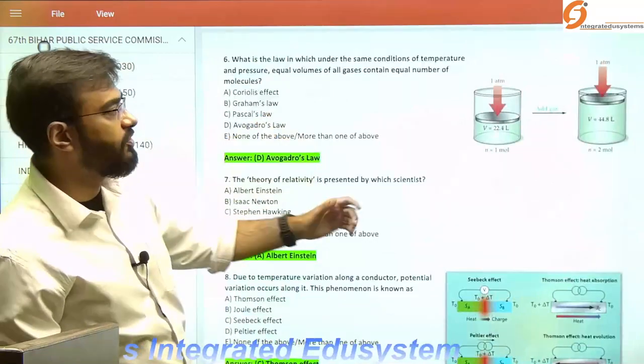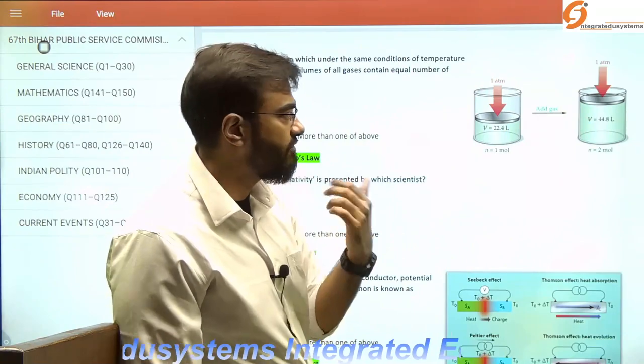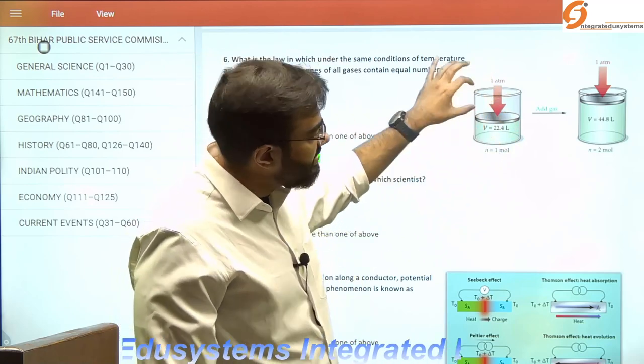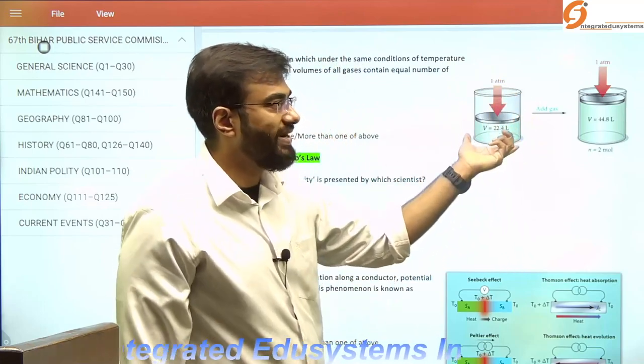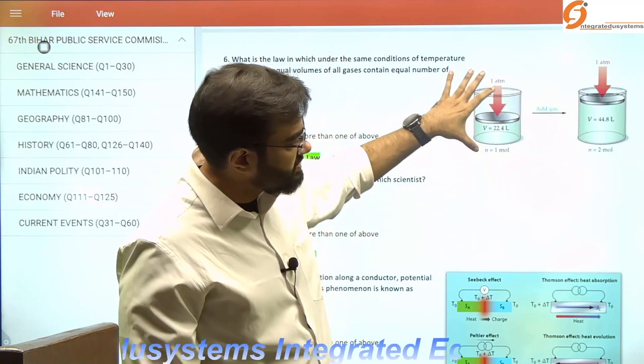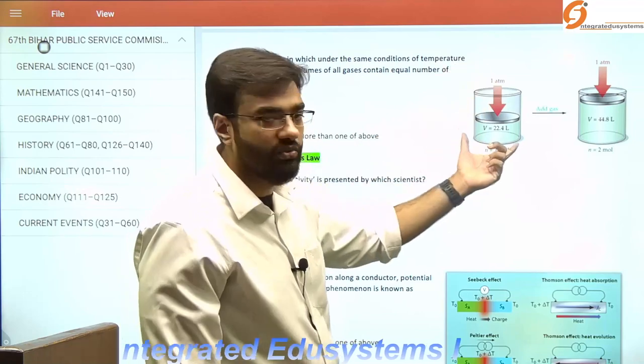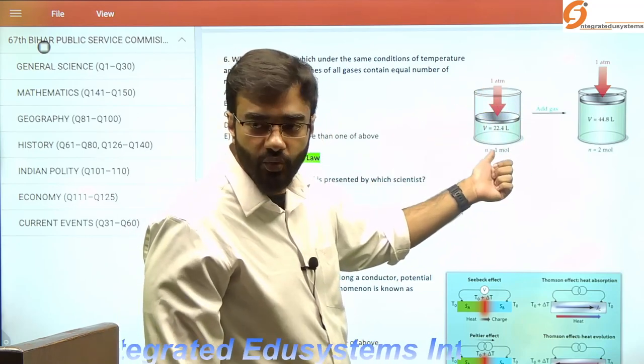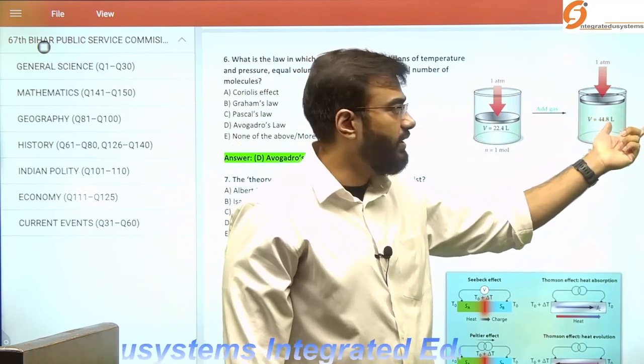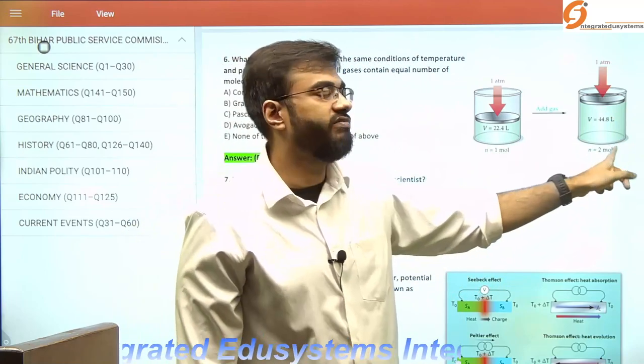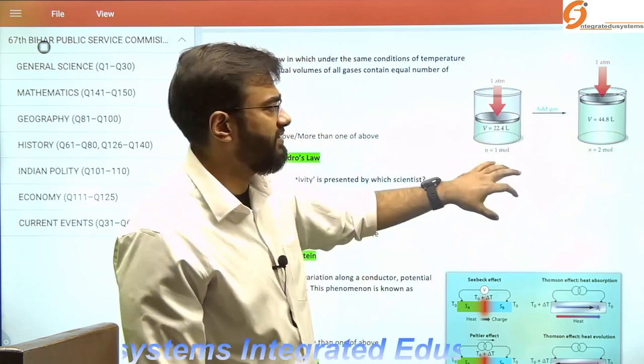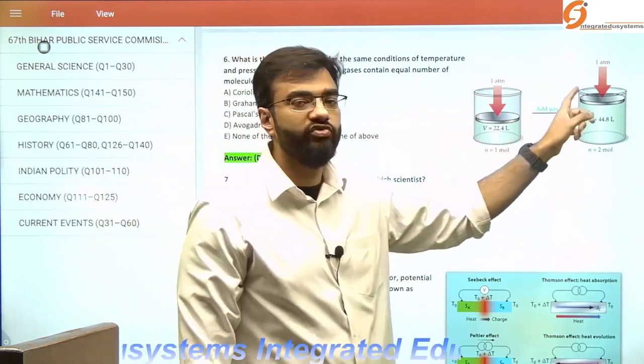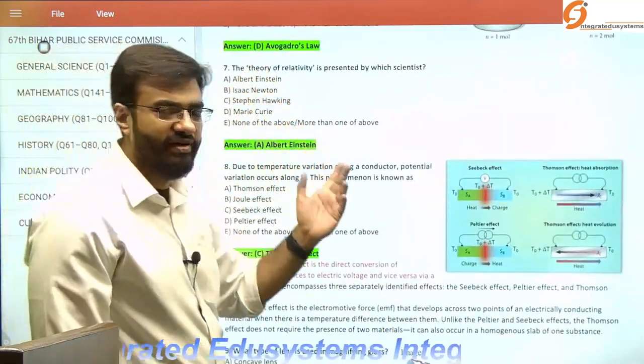Instead of reading the question, I'll explain with this diagram. Under constant pressure and temperature, Avogadro's law states that if we increase the volume by a certain extent, the amount of gas will also increase in the same ratio. If the volume is 22.4 liters containing 1 mole, when we increase it to 44.8 liters, the value becomes 2 moles. We can write n1/n2 = v1/v2.